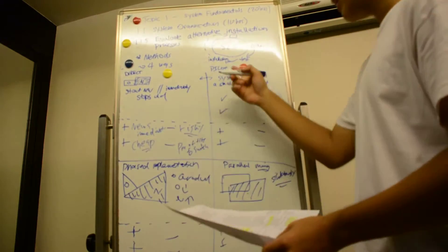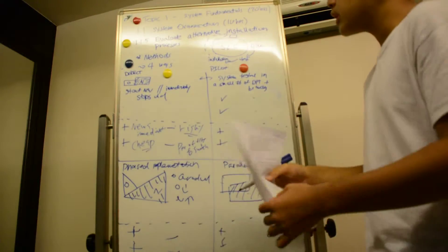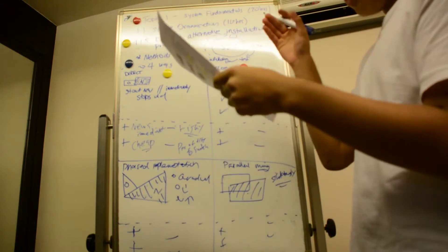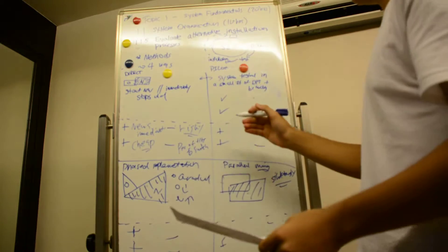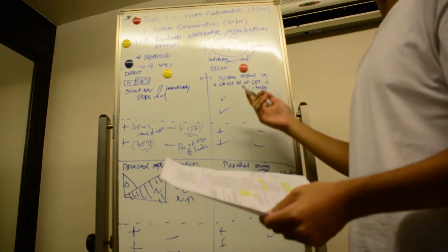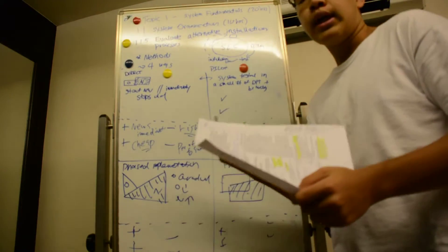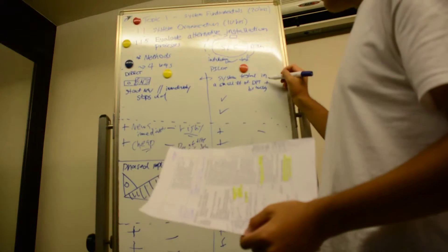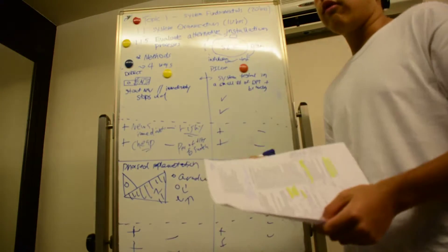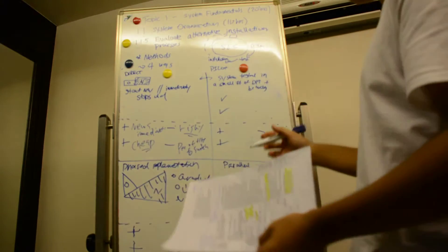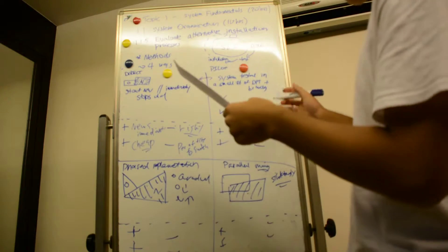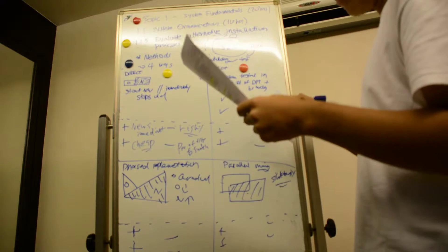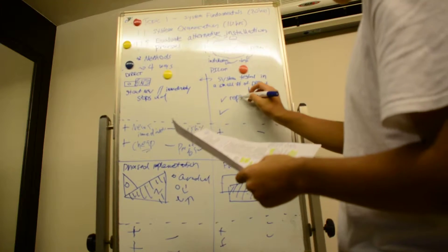Similar to the direct method is the pilot method, but pilot method is only the direct method at a particular branch or department. Let's say company X wants to implement Windows 10 where currently it's Windows 8. Using the pilot system, they would implement Windows 10 only for the humanities department or HR department. That's the pilot system: a system installed and tested in a small number of departments and branches, and they report back their findings.